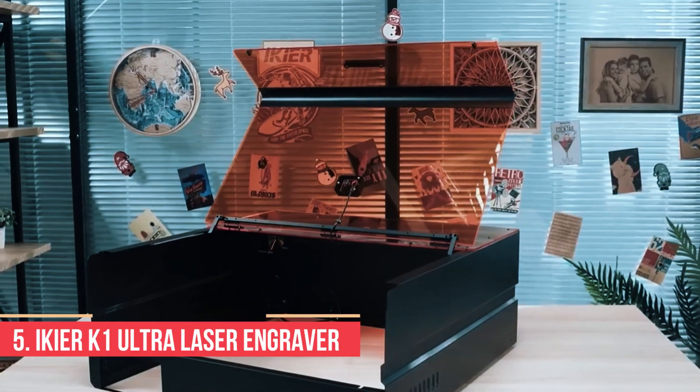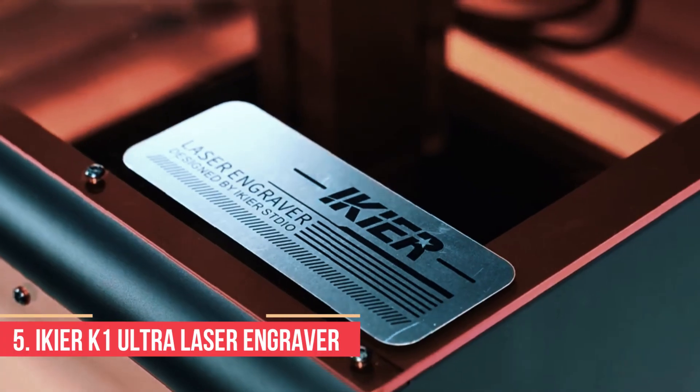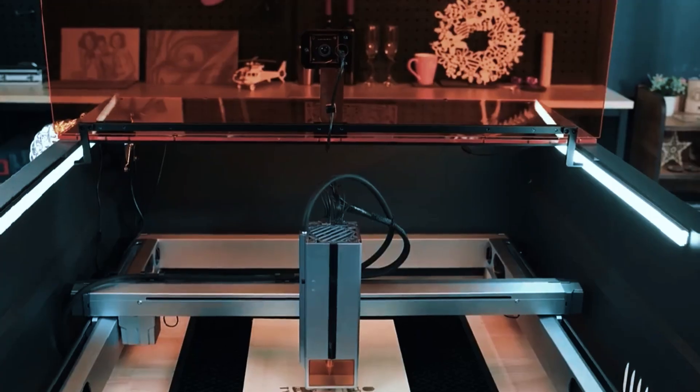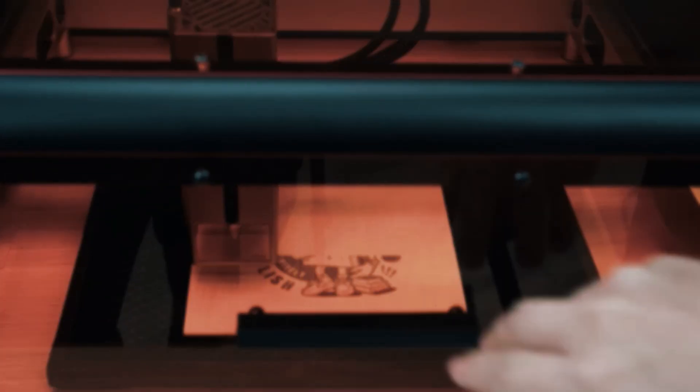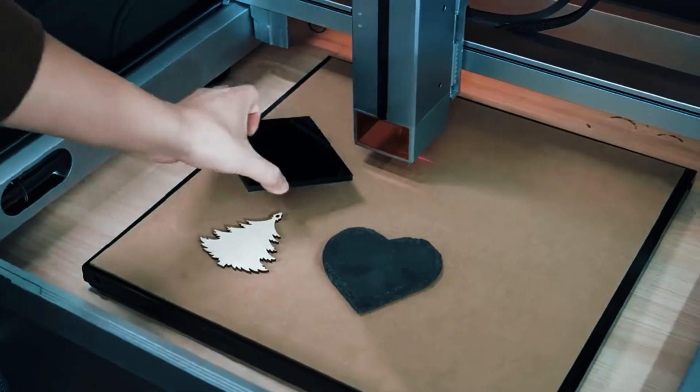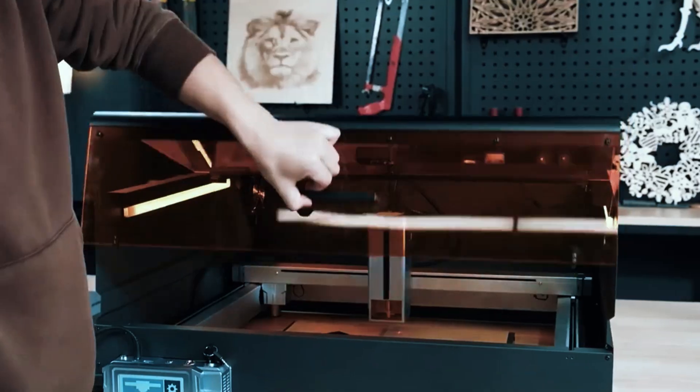Number five: IKEA K1 Ultra Laser Engraver. Users who have outgrown basic hobby engravers often look for something with more power and cleaner precision, and this machine fills that gap with a setup that feels noticeably stronger than entry-level models.